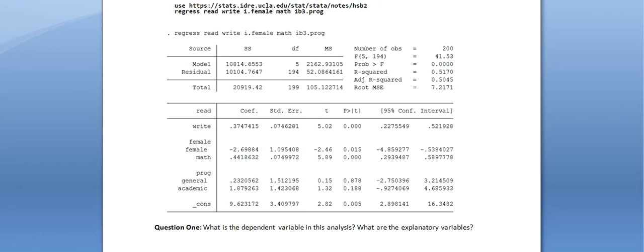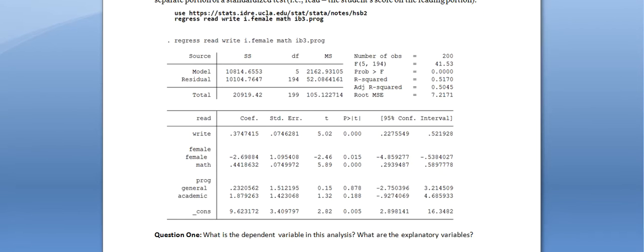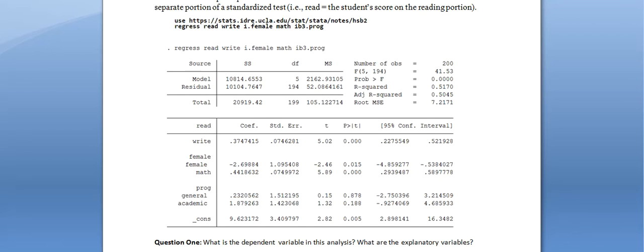We're going to skip over the cross-tabulation portion because it wasn't pertinent to the exercise and because most of you won't be running cross-tabulations this semester. In the exercise, you're given another sample regression output. When I say 'output,' I mean the type of table you get back from statistical software after running a regression — this is what results look like in SPSS, R, or Stata — but with different variables.